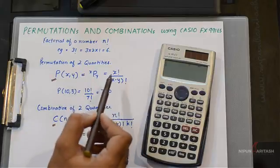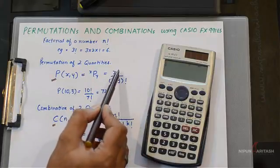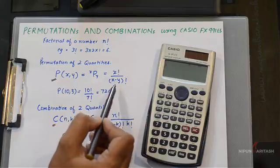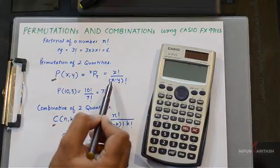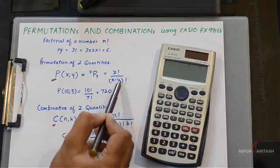you would need to find out the factorial of x and then you would need to divide it by x minus y factorial.